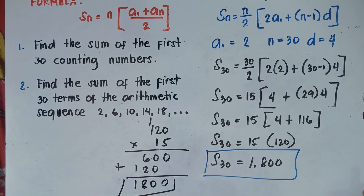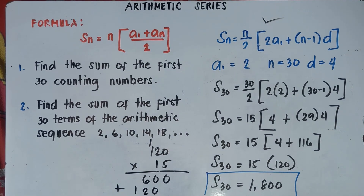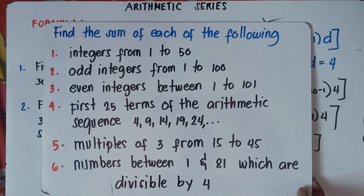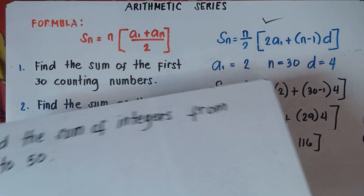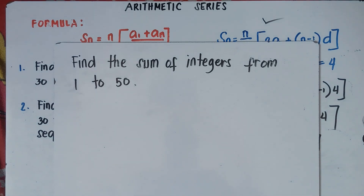Alright, so that's it, class. That's how you find the sum of the arithmetic series. For the next video, once again, I will put the link in the description below on how to answer the problem solving — quite complicated samples, but we will be answering this one. Now, before we end, try to answer this one: find the sum of integers from 1 to 50, and put your answer in the comment section below. Let's check if you really understand what I discussed. If you like this video, do not forget to subscribe, share it to your friends and classmates. Once again, this is Teacher MJ. Bye-bye!